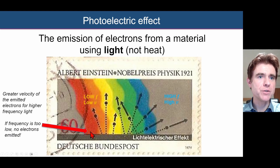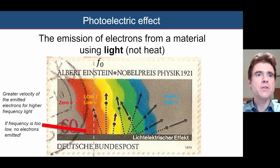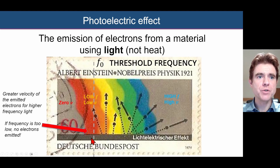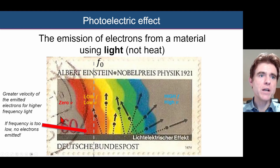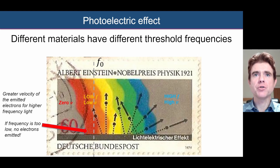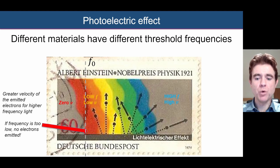In particular, we also notice that if the light has too low a frequency — such as being too far to the red or infrared end of the spectrum — then no electrons are emitted at all. This gives us the concept of the threshold frequency, whereby the light needs to be at least that certain frequency for the photoelectric effect to occur. Different materials have different threshold frequencies.